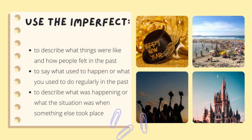Use the imperfect tense to describe what things were like and how people felt in the past, to say what used to happen or what you used to do regularly in the past, and to describe what was happening or what the situation was when something else took place.